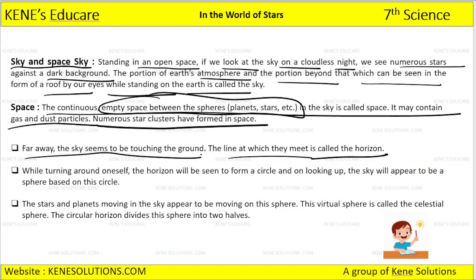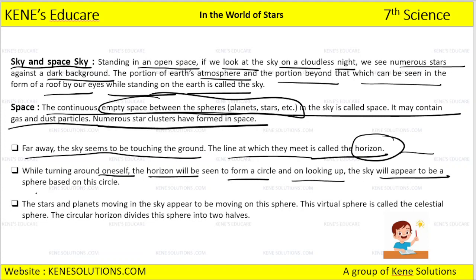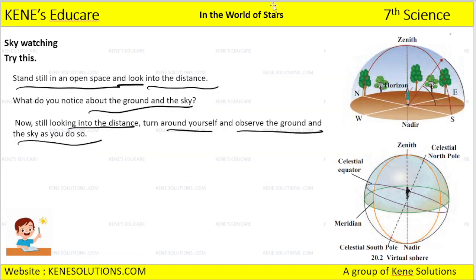If you see the sky, you will feel like the sky is touching the ground, and that is nothing but the horizon. While turning around oneself, the horizon will be seen to form a circle. And on looking up, the sky will appear to be a sphere on all sides. You can see that the horizon forms a circle.